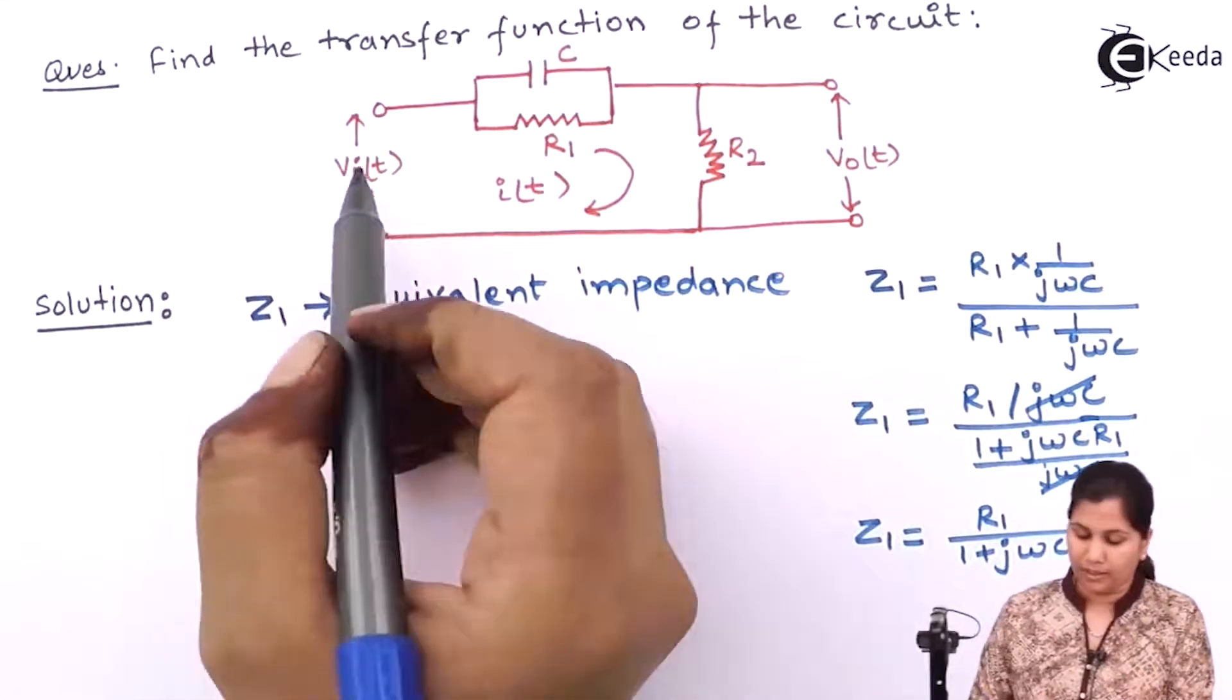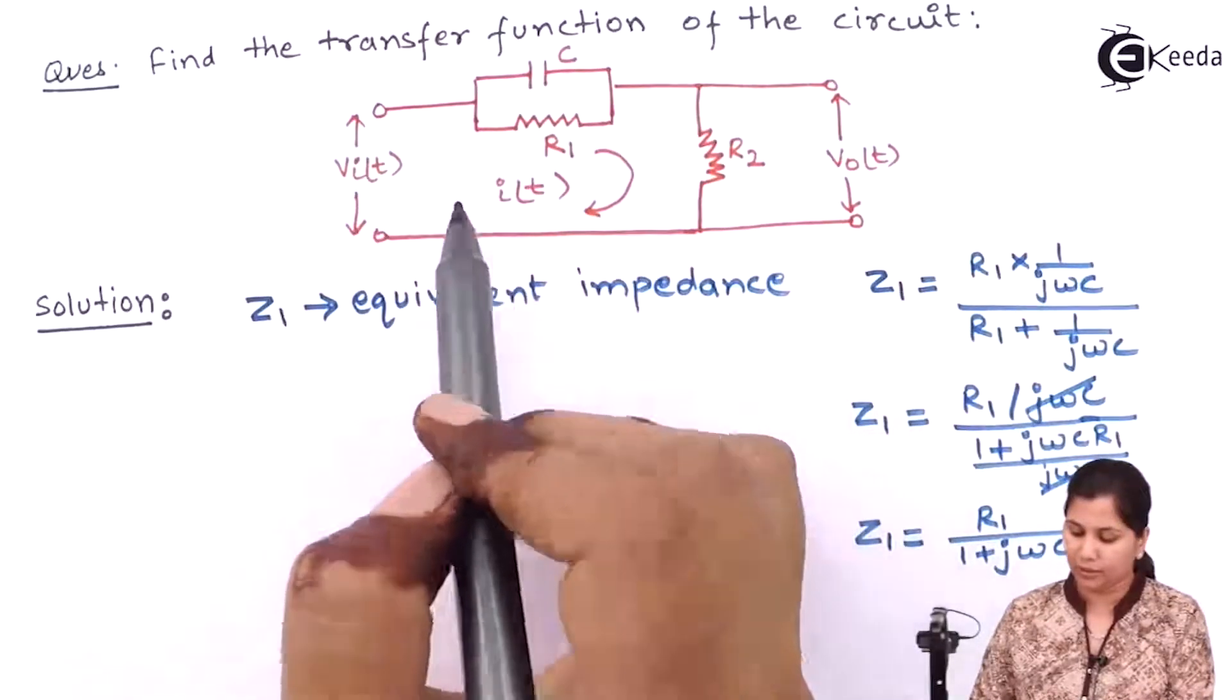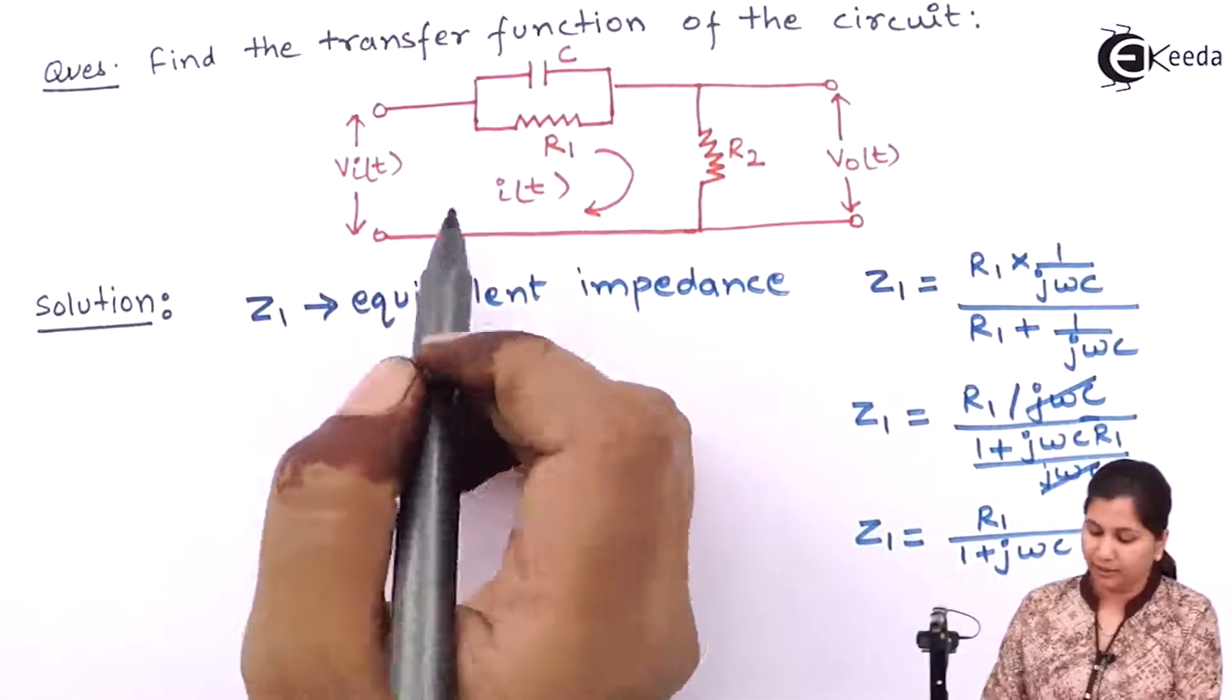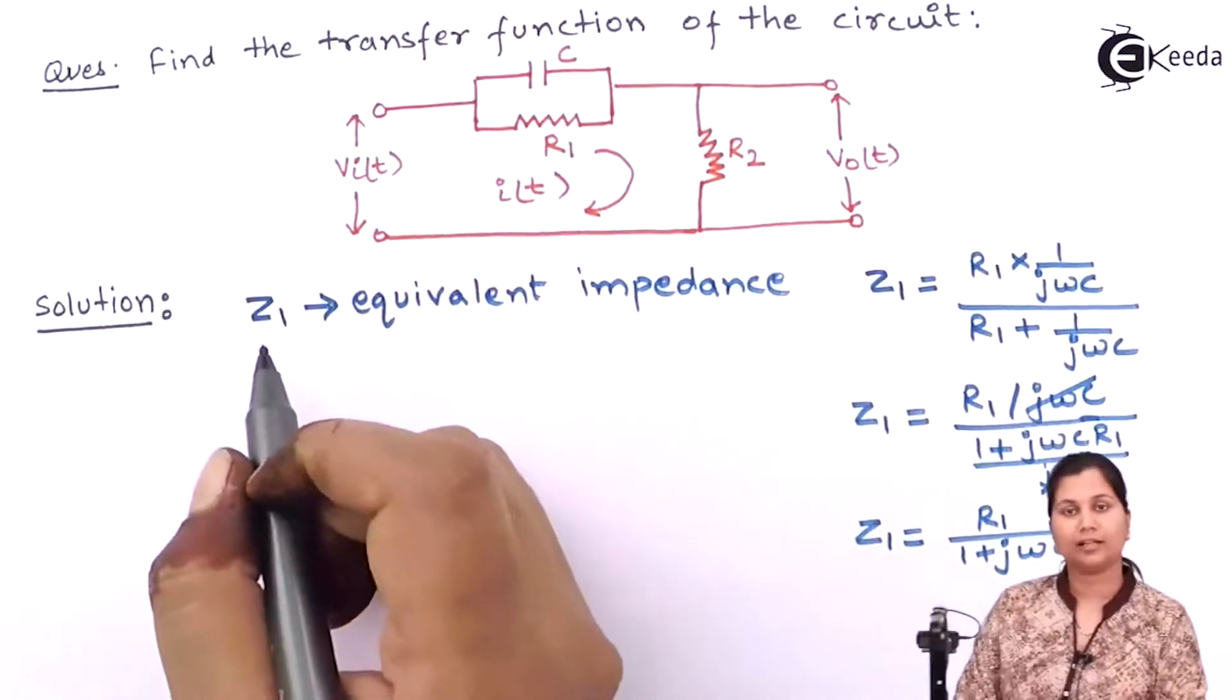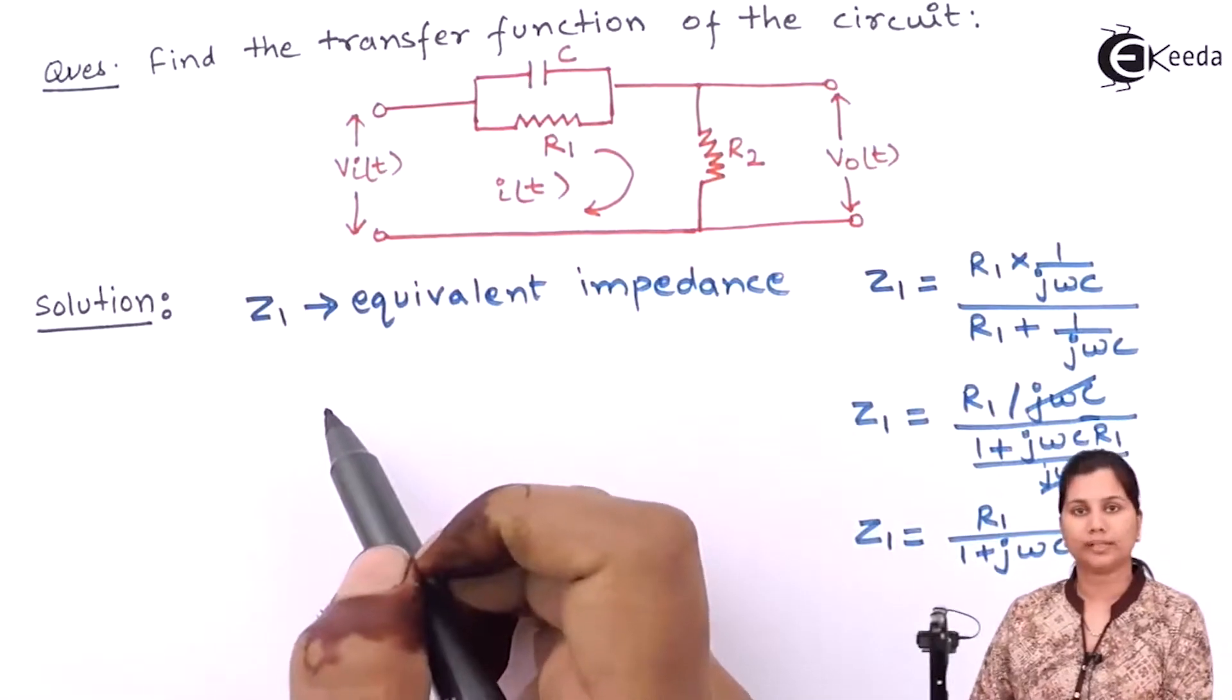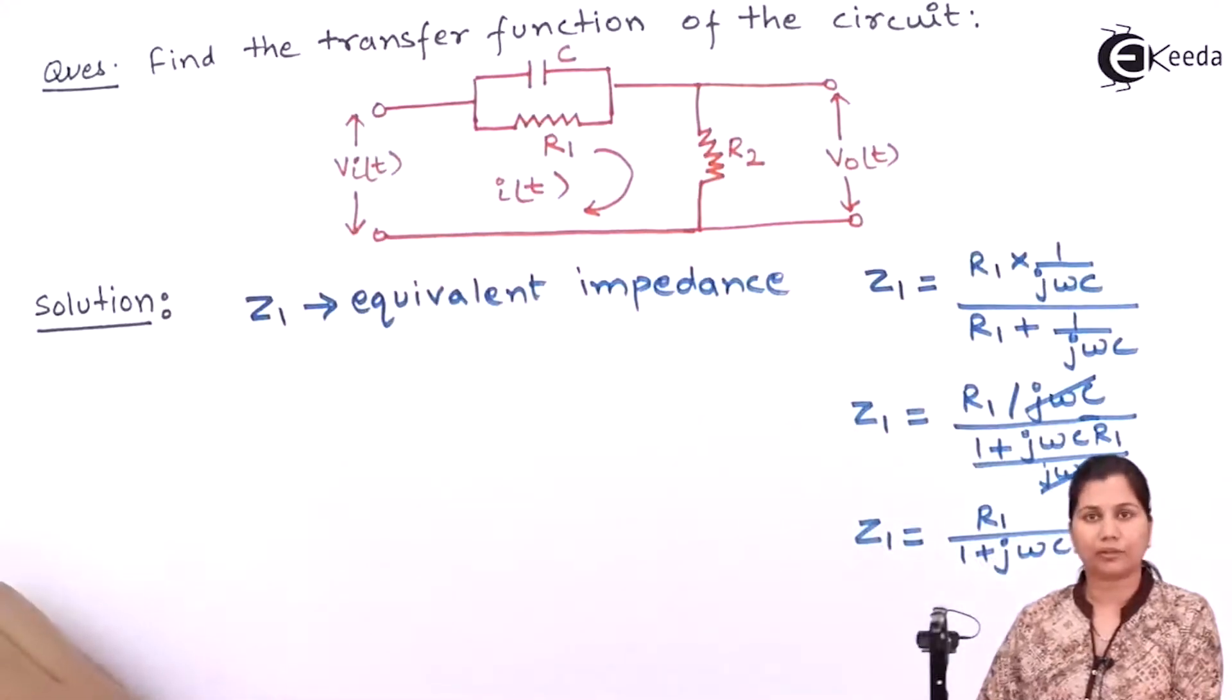Now if we apply Kirchhoff's voltage law in this loop, it will be given by the KVL which states that the algebraic sum of the voltages in a loop is equal to 0. So let's write the KVL for this loop.